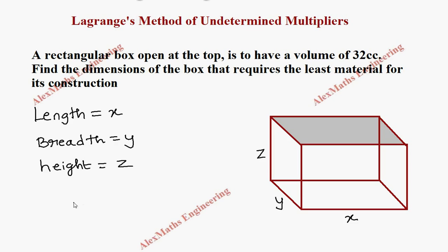As per the question, the volume is 32 cc, so the volume formula is length times breadth times height. They have given volume is 32, which means xyz = 32. Now the question is: find the dimensions of the box.